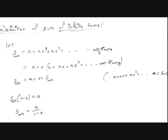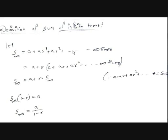An important thing: infinity is just a symbol, not a value. So infinity minus 1 or infinity minus 2 still gives infinity. Now, if we observe S∞ = a + a·r + a·r² + ..., the terms from the second term onwards are a·r, a·r², a·r³. If we factor out r from those terms, we get the same series back.